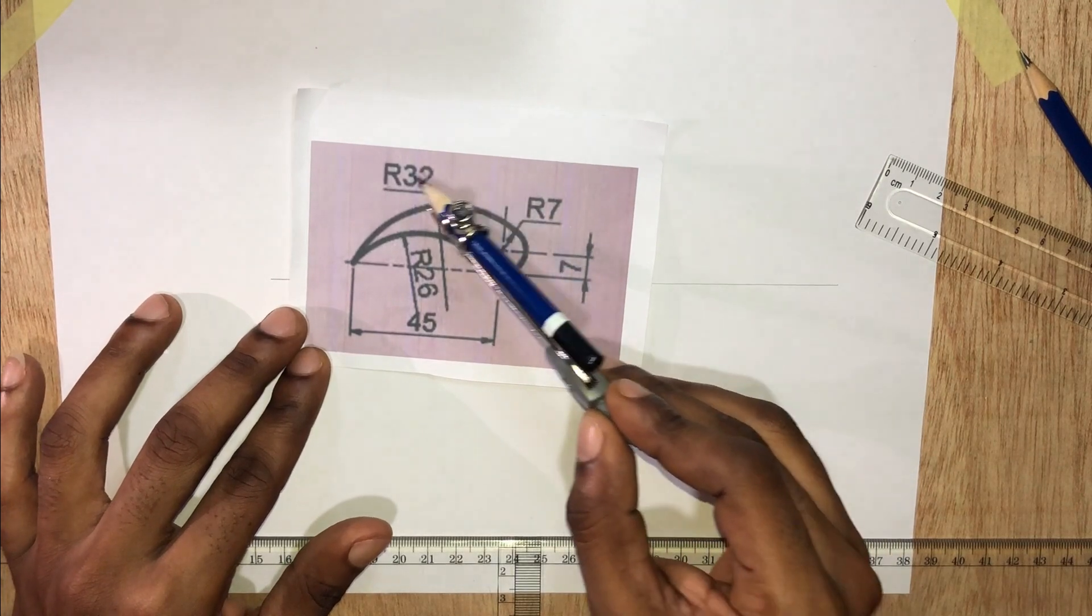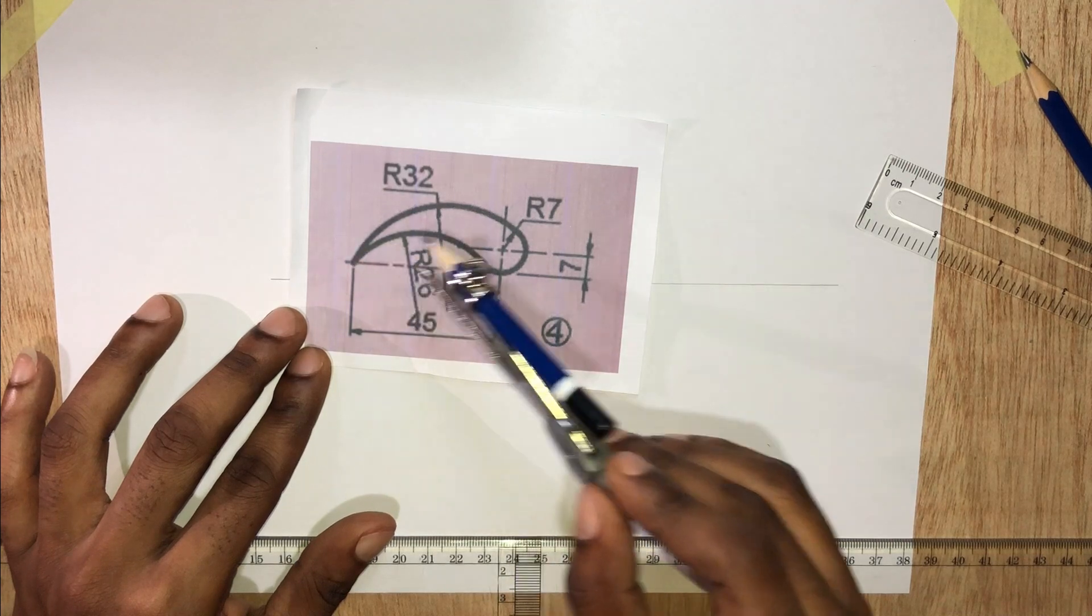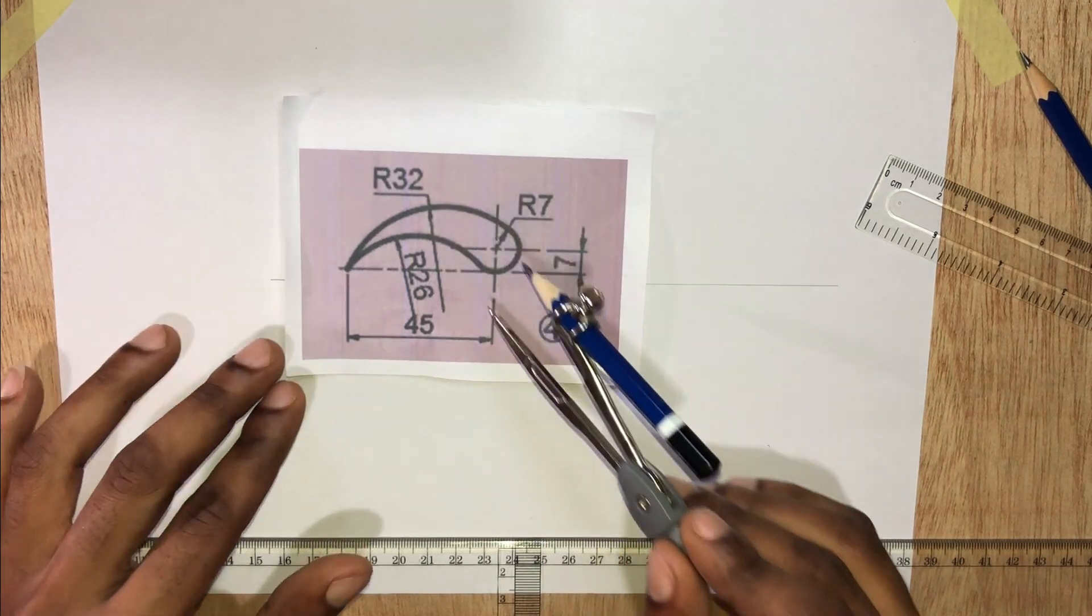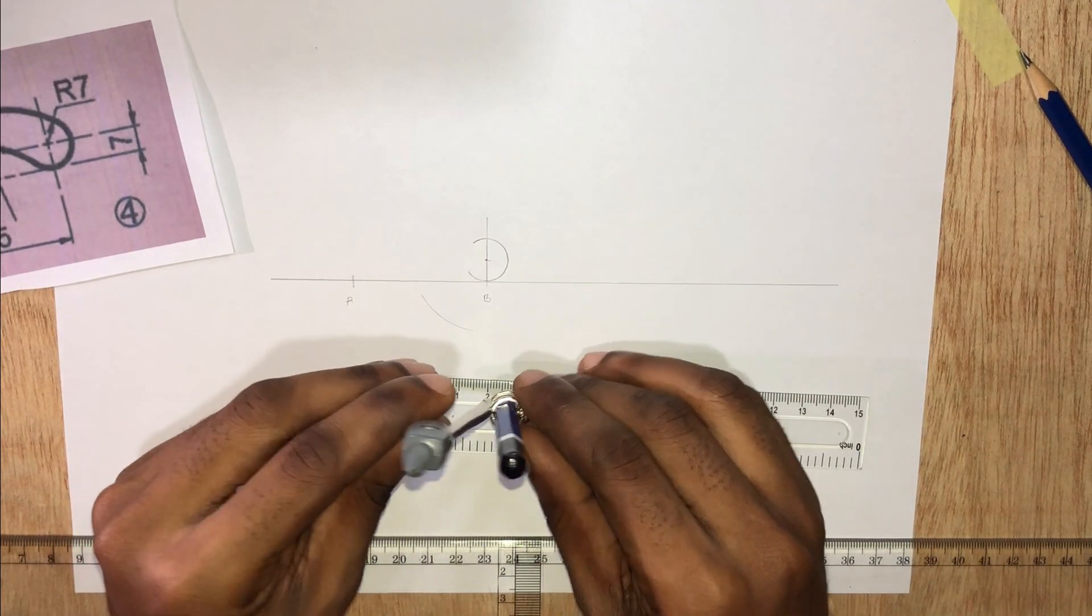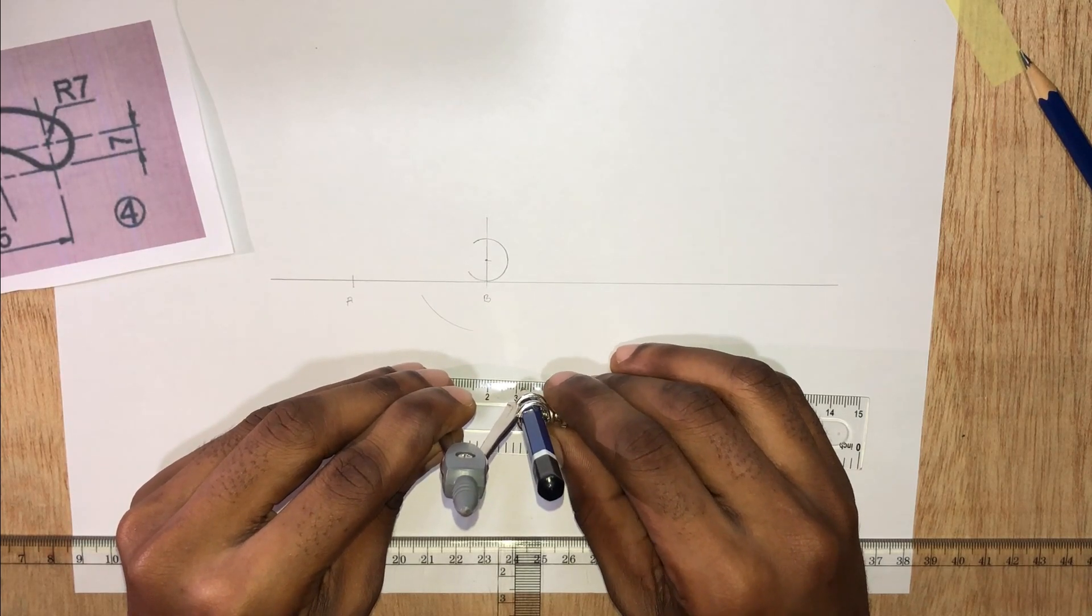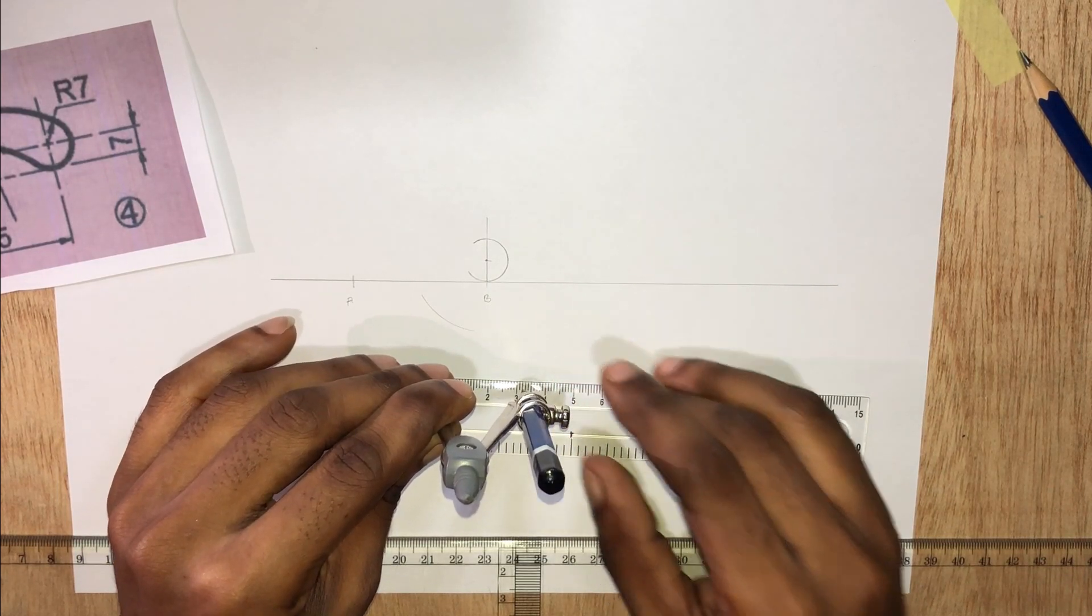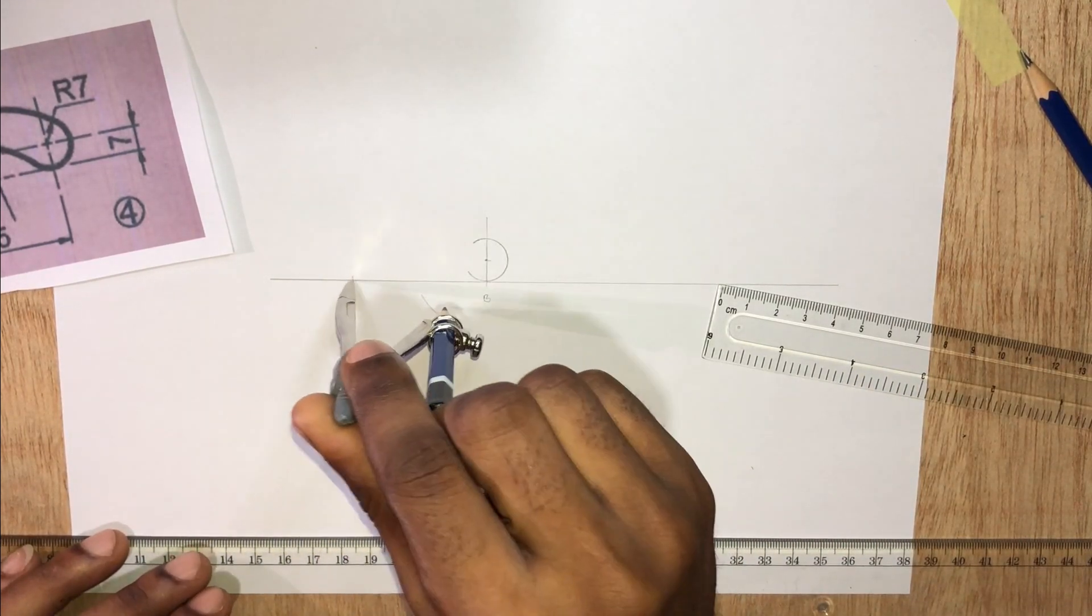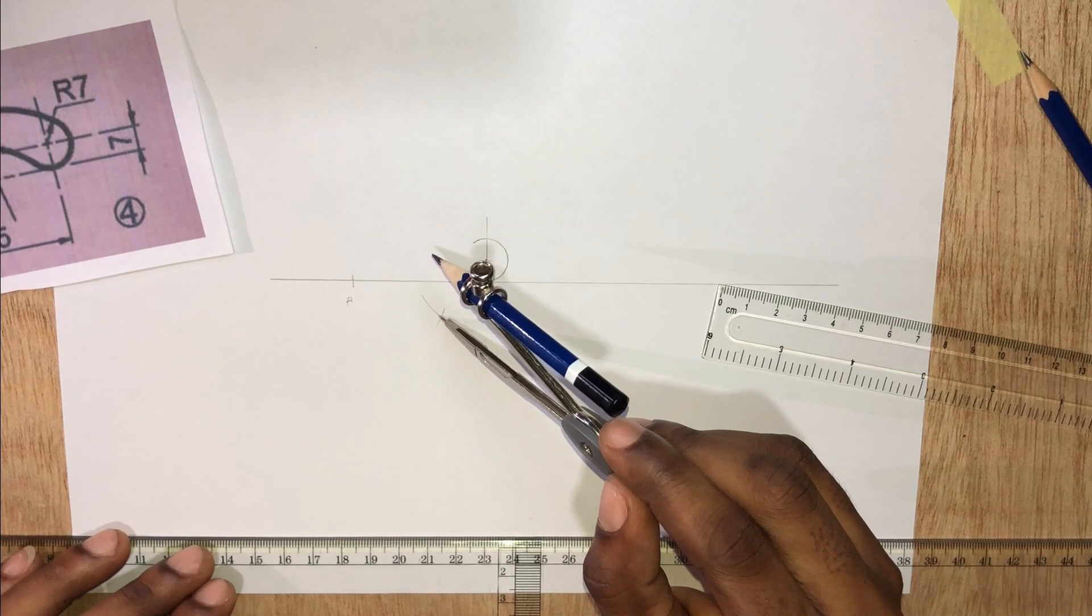Now since this circle passes through point A, we can stand at point A and cross the arc and draw it with a radius of 32 millimeters.